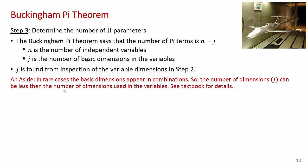Step 3 is to determine the number of pi parameters. The Buckingham Pi theorem says the number of dimensionless terms equals k = n minus j, where n is the number of variables and j is the number of basic dimensions. You find j by inspecting the list of variables from step 2. As an aside, in rare cases the basic dimensions appear in combinations, so the number of basic dimensions can be less than the number of dimensions in the variables — there's an example in the textbook dealing with this rare problem.